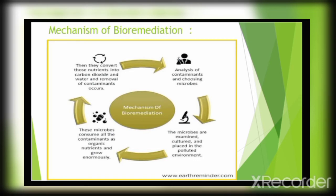Starting from the bottom left of the diagram: microorganisms basically consume environmental pollutants or contaminants as organic nutrients — as a food source. When used as a food source, microorganisms can grow, proliferate, and multiply. As they take up this food source, they recycle and convert it into less harmful or beneficial compounds like carbon dioxide and water, thereby replacing the contaminants from the polluted site.